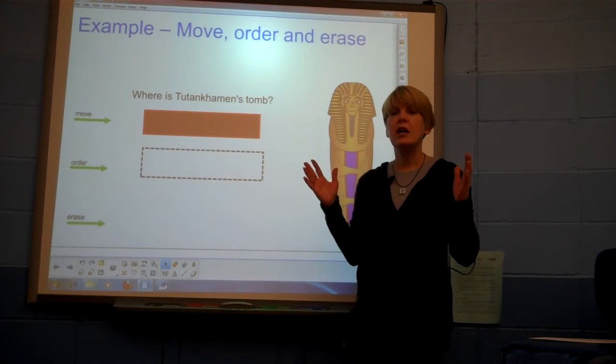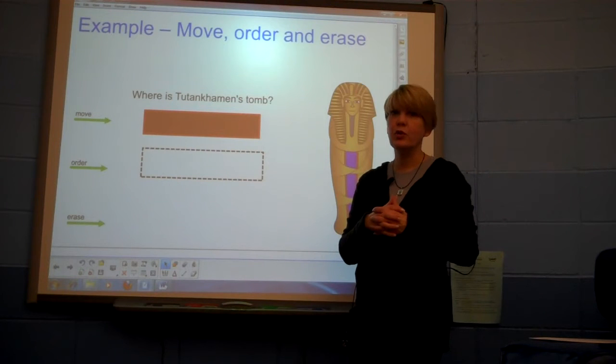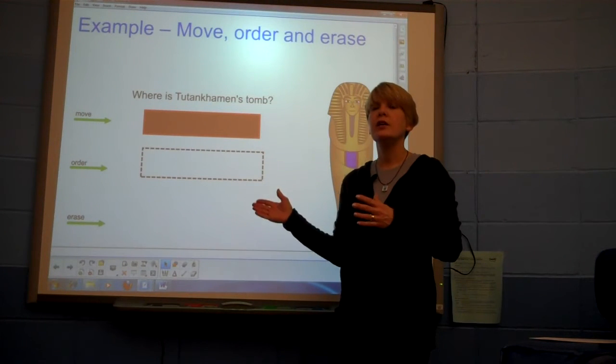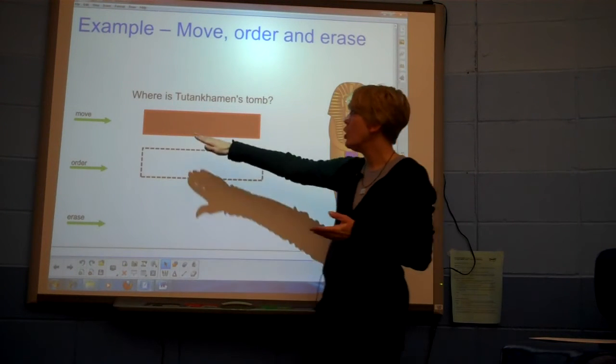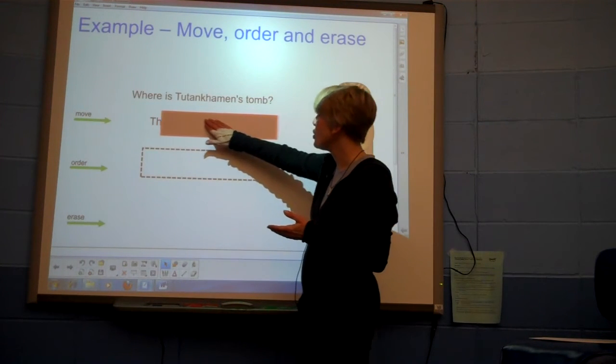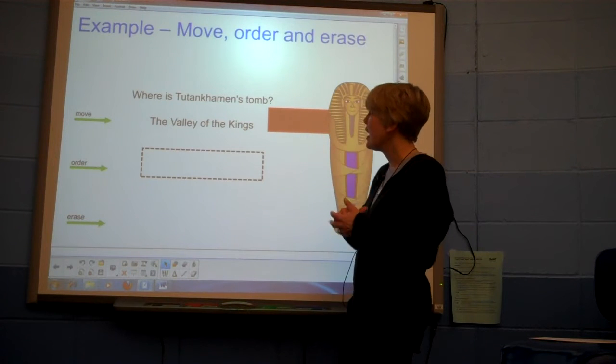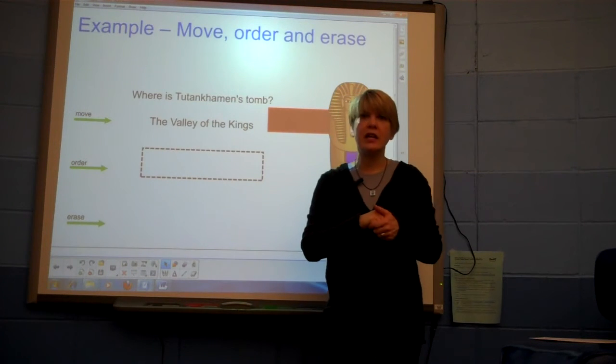But then an object larger than the text has been created, in this case this black rectangle, and it is put over the text to hide it. And all we need to do to reveal the answer is to move that object. The Valley of the Kings is hiding right under there.